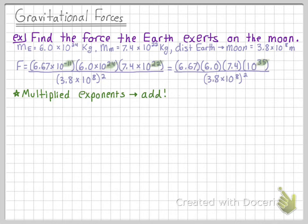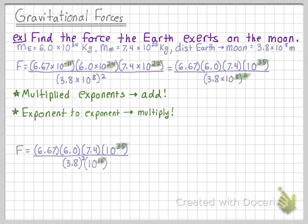If we have an exponent to an exponent, like in the bottom of this fraction or the denominator, we actually multiply these two together. So we get 8 times 2 is 16. And take note here that the 3.8 is also still squared.